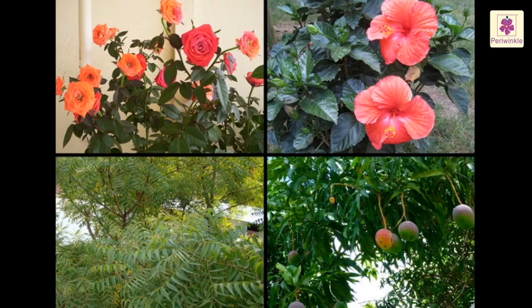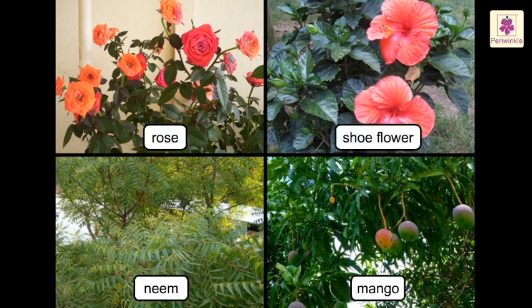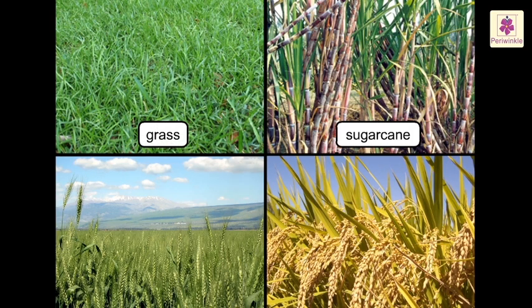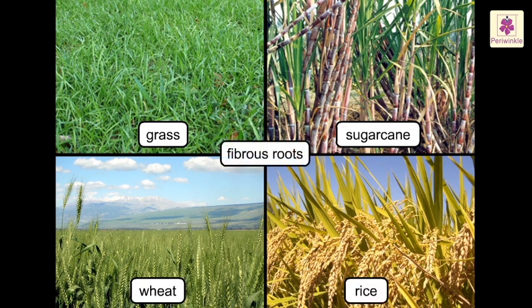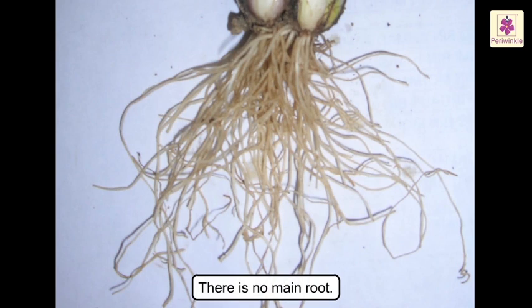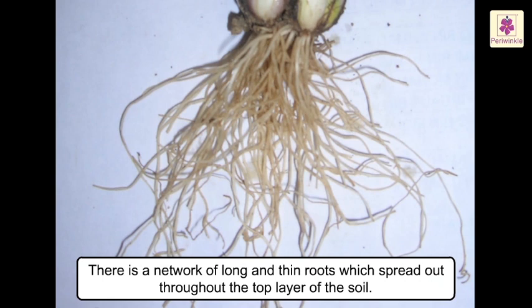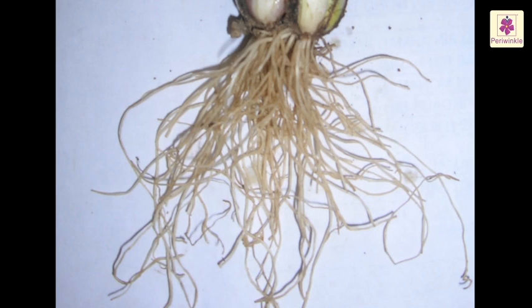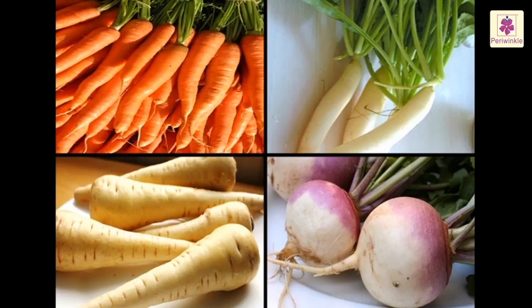There are two types of roots: taproot and fibrous roots. Plants like rose, shoe flower, mango, and neem have taproots. The main root is long and thick, and smaller roots grow from it. Taproots go deep into the soil. Plants like grass, sugarcane, wheat, and rice have fibrous roots. There is no main root — instead there is a network of long and thin roots which spread out throughout the top layer of the soil.